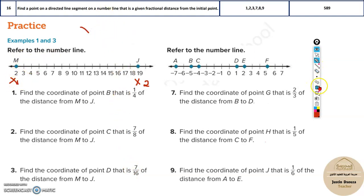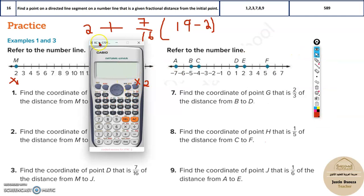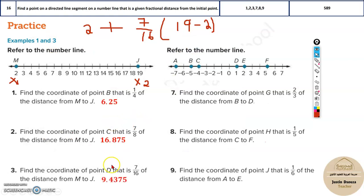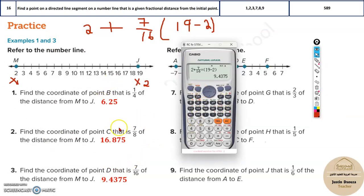All you need to do is initially start with x1. I'll write the values: 2 plus the fractional distance 7 by 16, multiplied by x2, which is 19, minus 2. And this would be the answer. All you need to do is put it in the calculator. So it's 2 plus 7 by 16, multiply it with 19 minus 2. 19 is mentioned as the final point and 2 is the initial point, and you will get 9.4375. So that would be the answer. Same way you can try the others and check the answers.